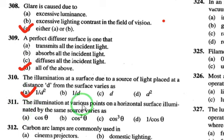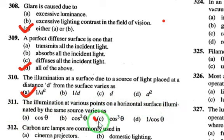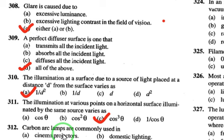The illumination at various points on a horizontal surface illuminated by the same source varies as cos³θ. This is derived from Lambert's cosine law, where E = I/d² × cosθ. After the full derivation, E = I/h² × cos³θ, so E is proportional to cos³θ.